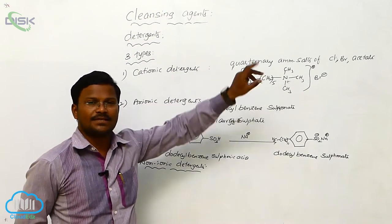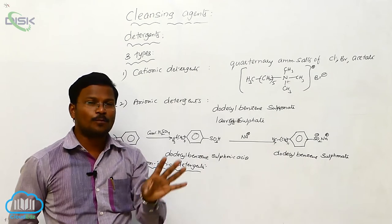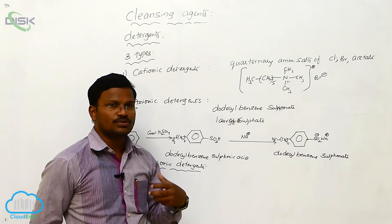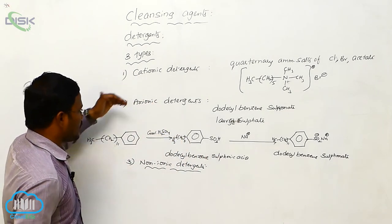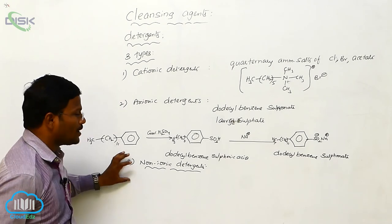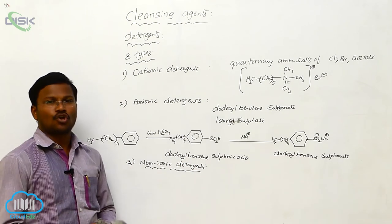The last topic related to cleansing agent widely used by us in our daily life. The two types of cleansing agents, soaps and detergents. As soaps cannot produce as much amount of result with hard water, then we have to use detergents. Three types of detergents: cationic detergents, anionic detergents, and non-ionic detergents. This is about our topic.